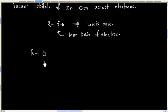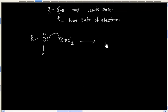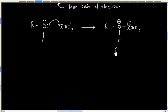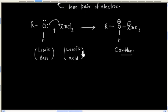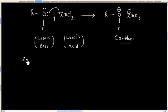If I have alcohol, this reacts with ZnCl2 and it forms a complex. This is simply Lewis acid-base reaction. ZnCl2 acts as complexing agent.